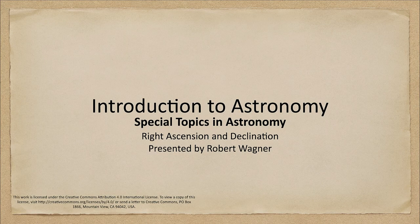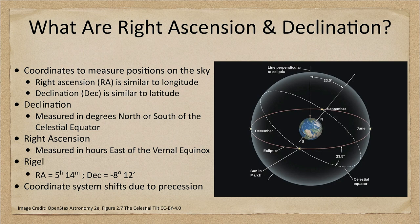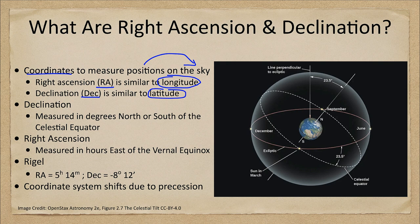Greetings and welcome to the introduction to astronomy. In this week's special topic in astronomy, we are going to talk about right ascension and declination, a coordinate system used in astronomy. They are coordinates used to measure positions in the sky. Right ascension, or RA, is similar to longitude here on earth, whereas declination is similar to latitude.